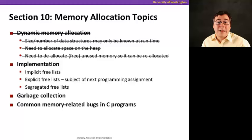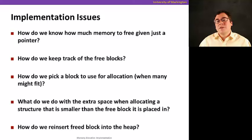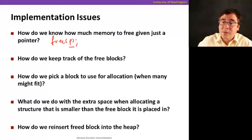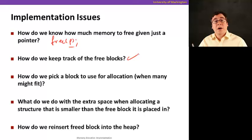Now that we know the basics of dynamic memory allocation, let's see how it is implemented. The main implementation issues or questions are: first, how do we know how much memory to free given just a pointer? How do we keep track of which blocks in our heap are free? How do we pick a block among the free blocks to be allocated when many of them might fit? It could be because we need to reduce fragmentation, we need to be fast enough and so on.